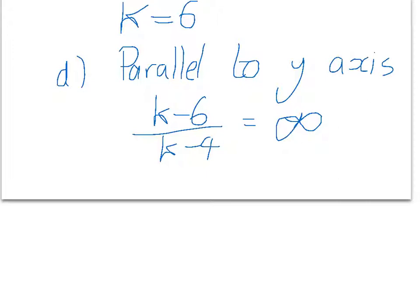Because what that's implying is it's hitting a number called infinity that it doesn't know. And the only way that can happen is when the bottom value, so this k minus 4, is equal to 0. So, if we're asked to do parallel to the y-axis, it'd be k minus 4 equal to 0. So, k would be 4.